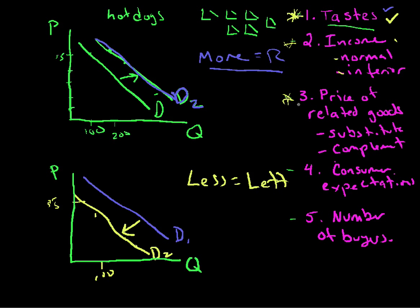Price of related goods. What happens if all of a sudden hamburgers were $40 a hamburger? Everybody would stop buying hamburgers, and if the price of hot dogs was the same, they'd buy more hot dogs. So this is a substitute good, and if the price of hamburgers goes up, you don't buy hamburgers anymore. You buy hot dogs, and the demand for hot dogs shifts to the right. Now, a complement good is something that goes with hot dogs, like mustard. So if the price of hot dogs goes down, you buy more mustard, and the demand for mustard would shift to the right.